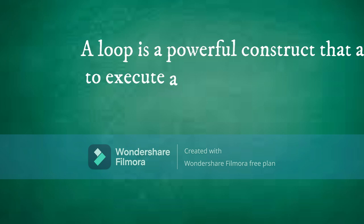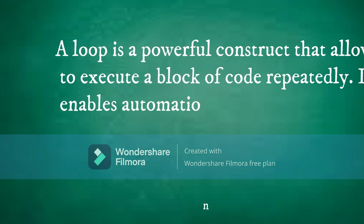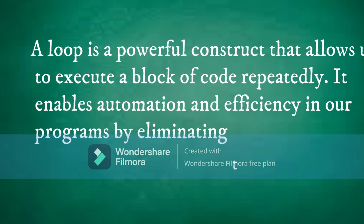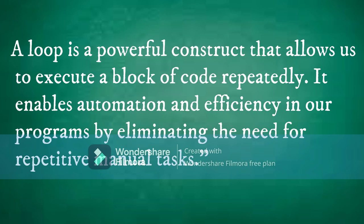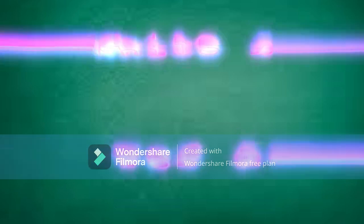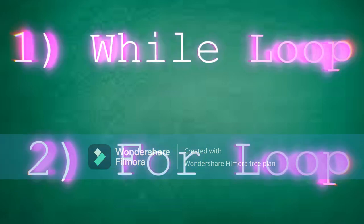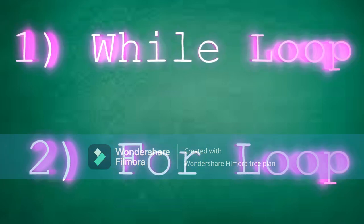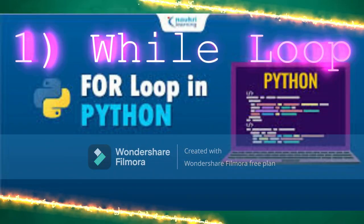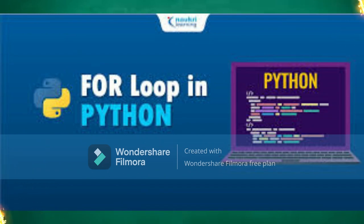A loop is a powerful construct that allows us to execute a block of code repeatedly. It enables automation and efficiency in our programs by eliminating the need for repetitive manual tasks. In Python, we have two main types of loops: the for loop and the while loop. Let's unravel the syntax of each and understand their unique uses.